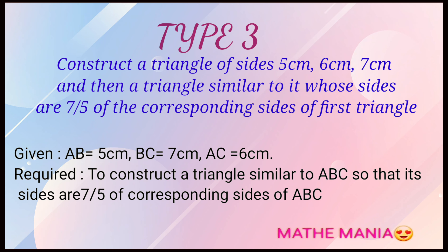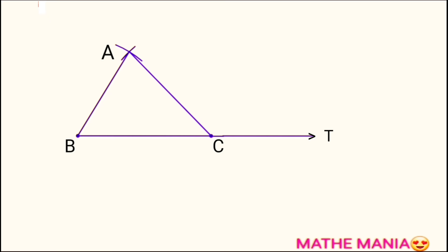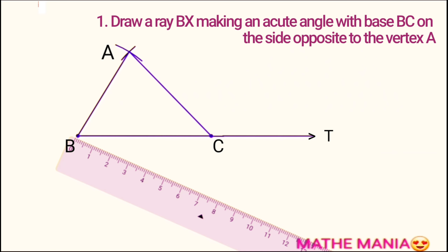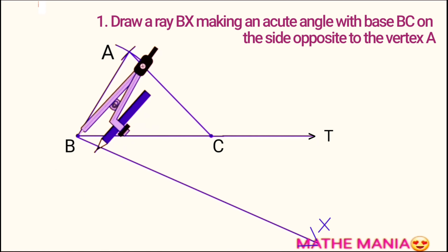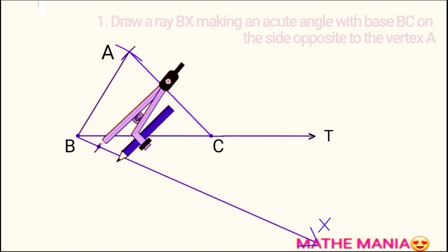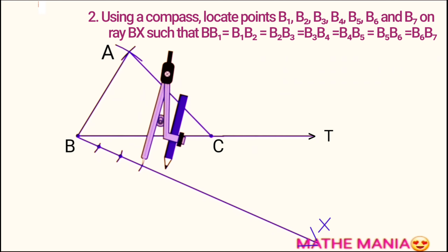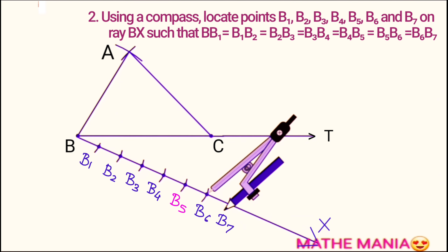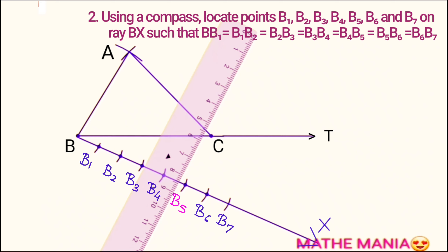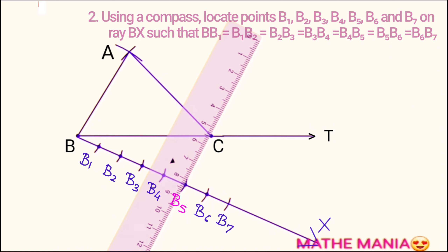Time for self-check: triangle constructed, ray drawn — but how many arcs have you drawn? Four, five, or seven? You have got it right — we'll draw the bigger number, that is seven arcs on this ray.